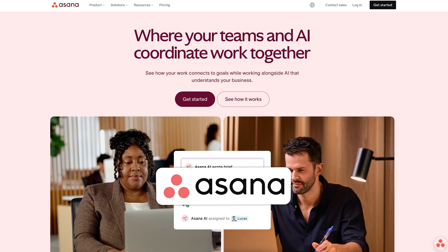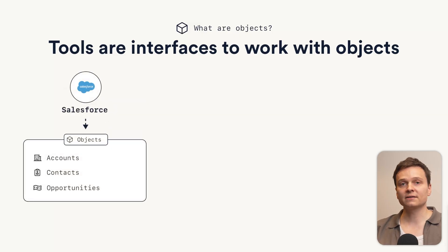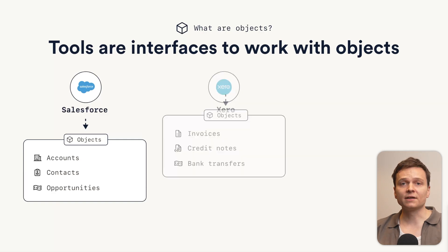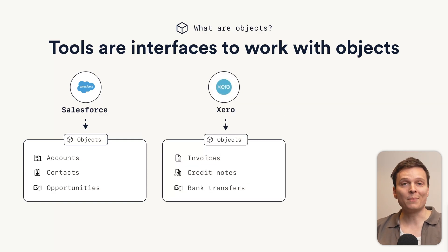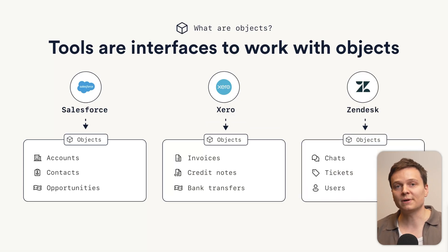One way to look at the tools you use on a daily basis is that they are interfaces to work with these objects. Most software applications you use daily, like Salesforce, Asana, or HubSpot, come with predefined objects that serve specific purposes. Salesforce has accounts, contacts, opportunities, so you can sell. Xero has invoices, credit notes, bank transfer objects, which are great for accounting. Zendesk, which is a customer support platform, has chats, tickets, and user objects. These predefined objects work great when your business processes align perfectly with how the software was designed.